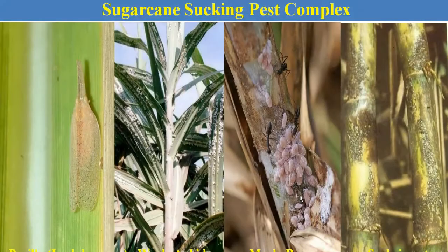The next category is the sugarcane sucking pest complex. It is called a sucking pest complex because these pests have piercing and sucking type mouthparts and continuously suck the cell sap from the tender plant parts. It includes sugarcane pyrilla, woolly aphid, mealybug, scale insect, and also whitefly.